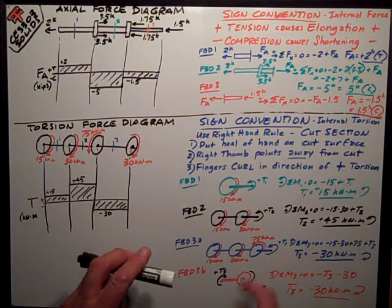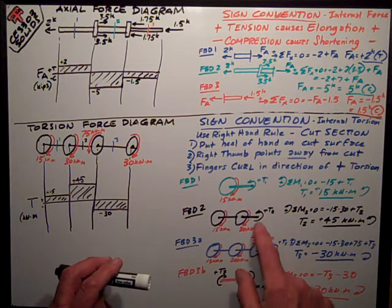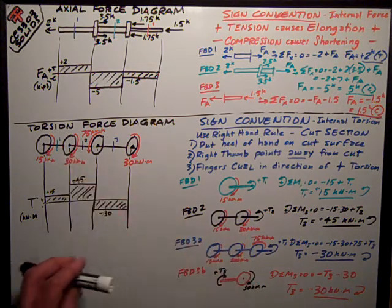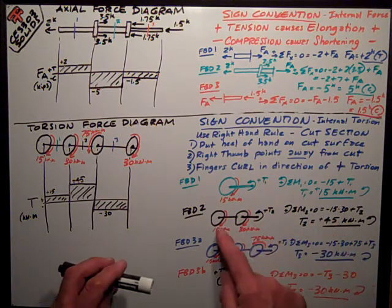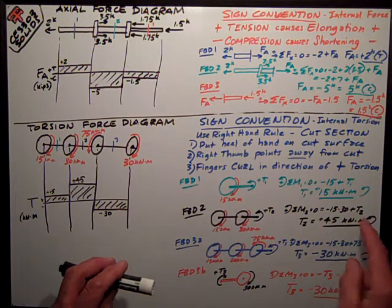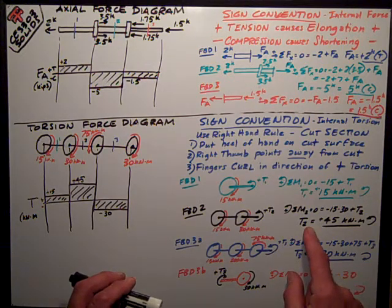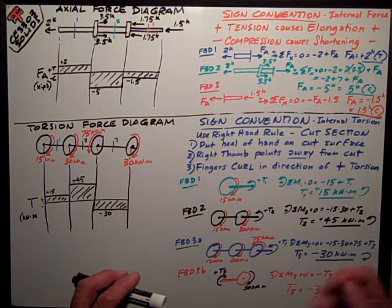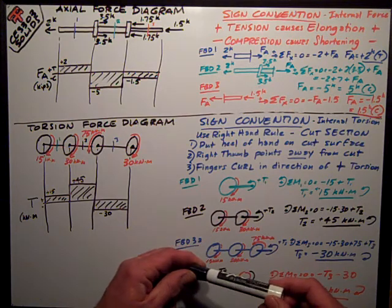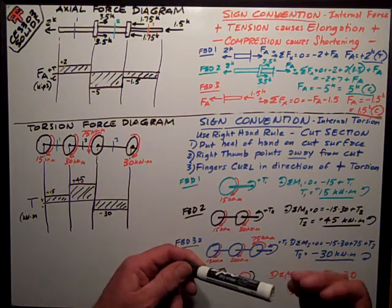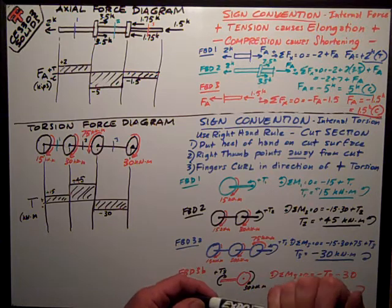Continuing on, I cut section 2. I now have an extra external torsion of 30 from the second wheel. My sign assumptions remain the same. The equation gives negative 15 minus 30 plus T2 equals 0, so T2 equals positive 45 kilonewton meters. Those torsions are trying to turn it one way, so this internal torque resists by turning it the other direction to maintain equilibrium.